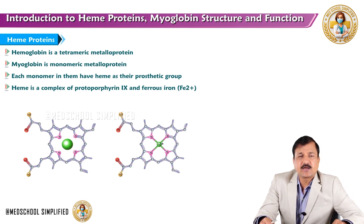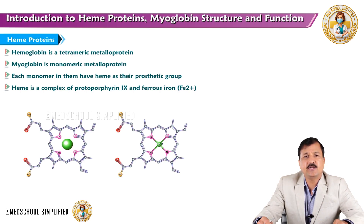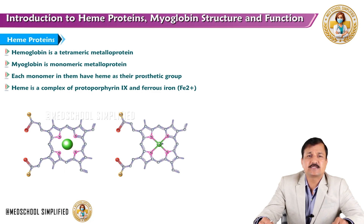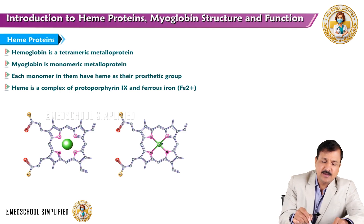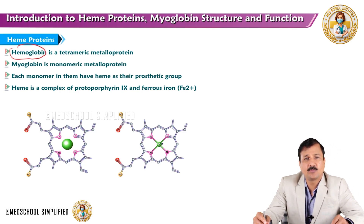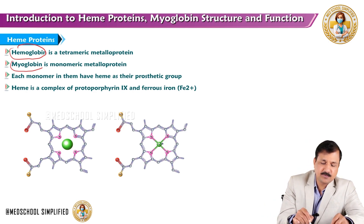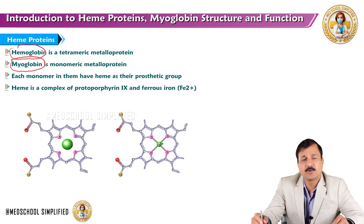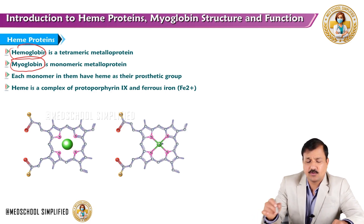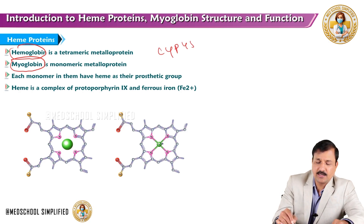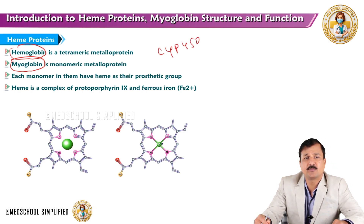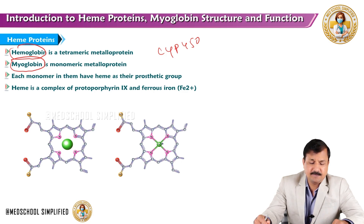Heme proteins contain a heme as the prosthetic group. Note that heme is an iron-containing organic molecule that is in turn attached to a protein molecule. Examples of heme proteins include hemoglobin, which is a tetrameric metalloprotein, and myoglobin, which is a monomeric metalloprotein. Cytochrome P450s and cytochromes present in the electron transport chain are also heme-containing proteins.